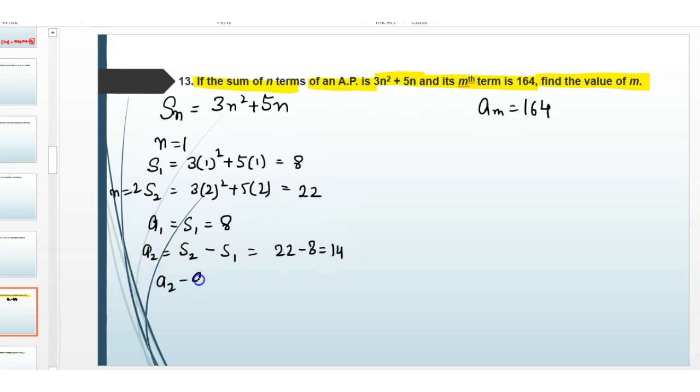Then a2 minus a1 is equal to d, the common difference. 14 minus 8 is equal to 6.